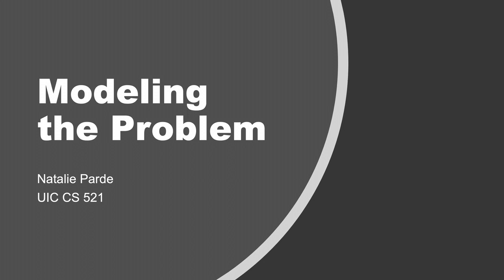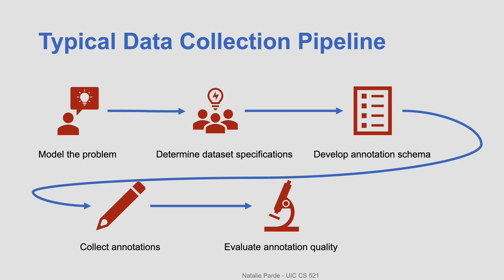In this video, I'll discuss stage one of the data collection pipeline: modeling the problem. I'll talk about setting annotation goals, defining annotation tasks, and determining the scope of both the task and the corpus as a whole. A typical data collection pipeline is shown here. We can see that in building a dataset, we start out by modeling a problem and then determining our dataset specifications, then developing annotation schema and collecting annotations, before finally evaluating annotation quality. In this video, I'll focus on the first of those steps: modeling the problem.